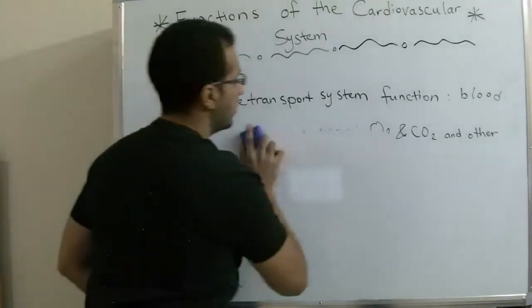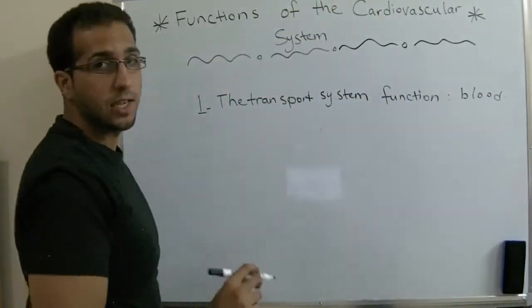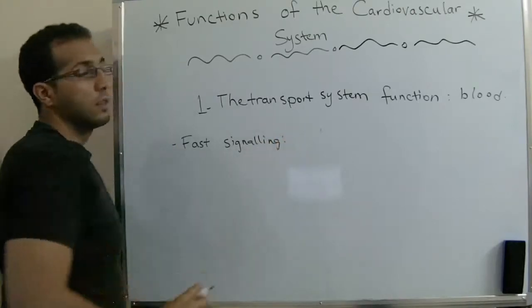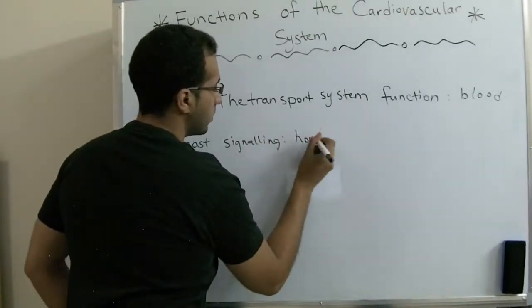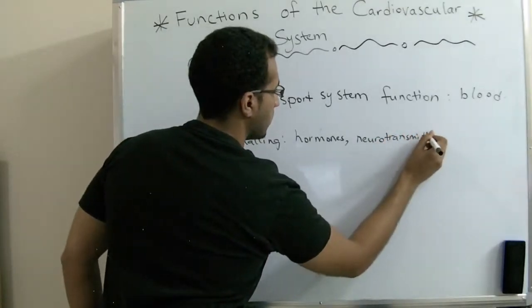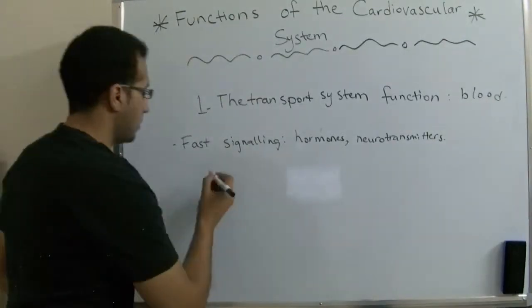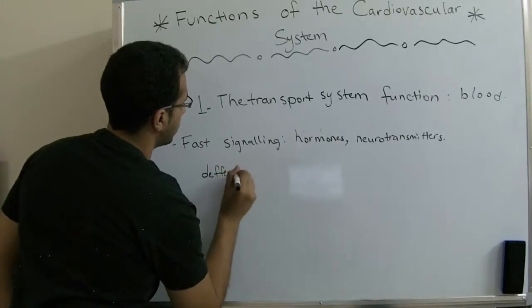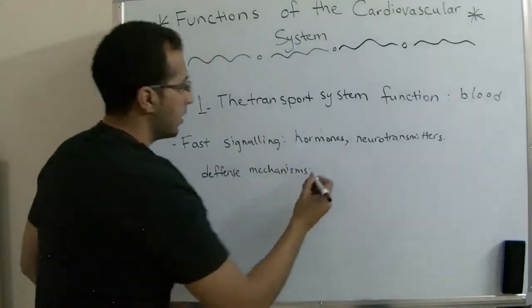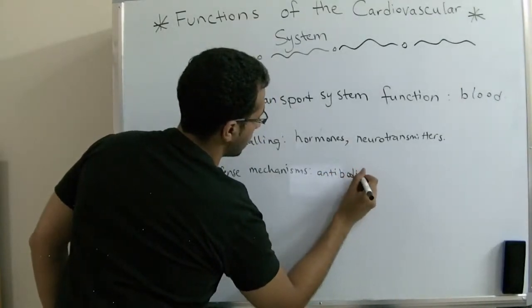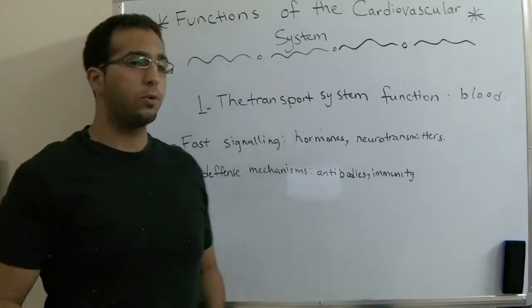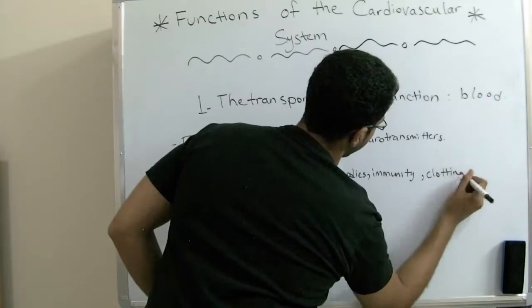For the second mechanism, we're going to talk about fast signaling. The fast signaling includes hormones, neurotransmitters, and also defense mechanisms. These defense mechanisms include antibodies, immunity, and clotting proteins.